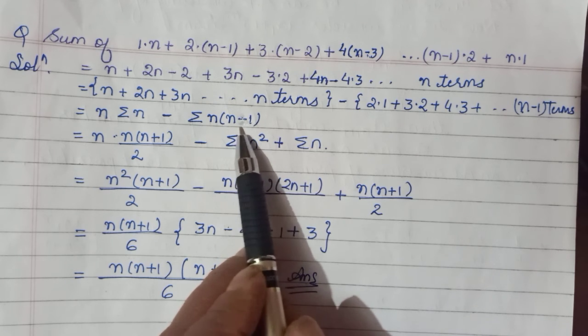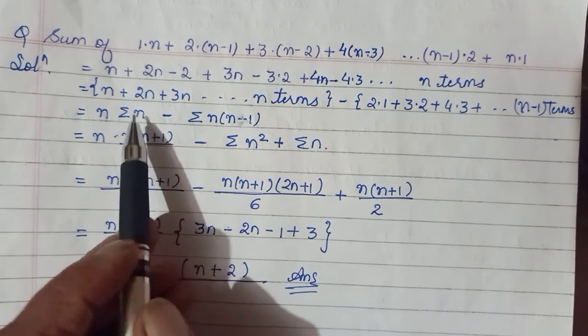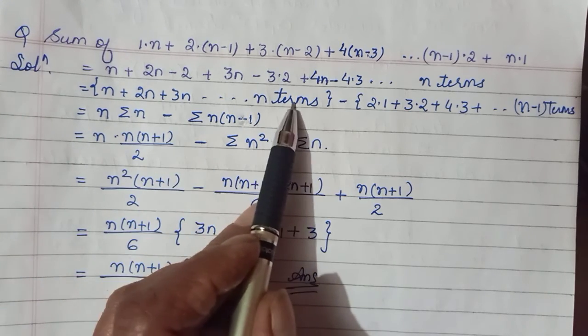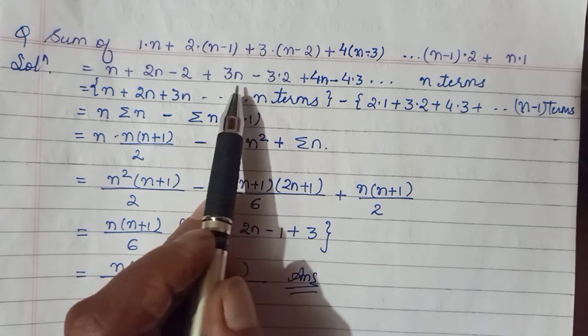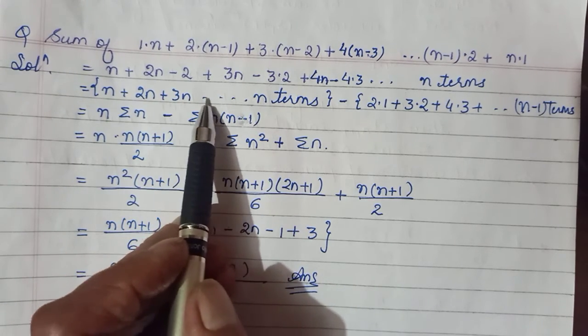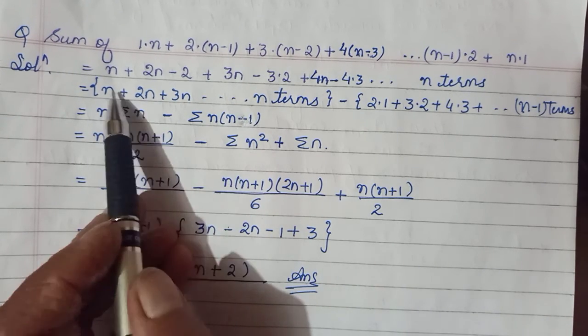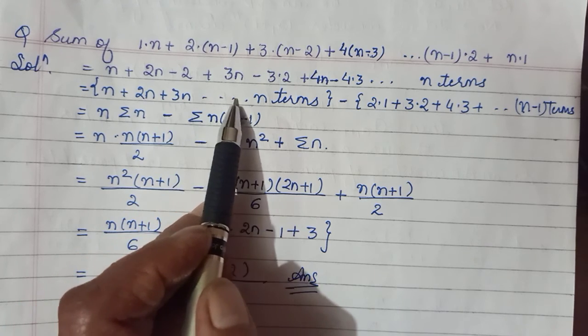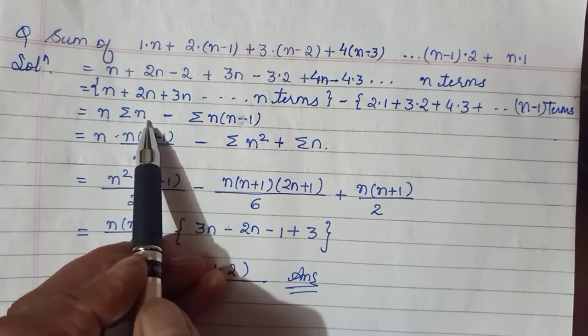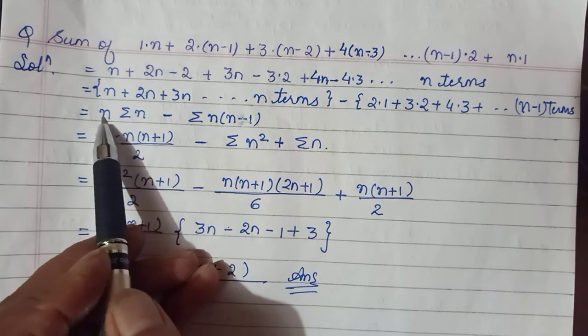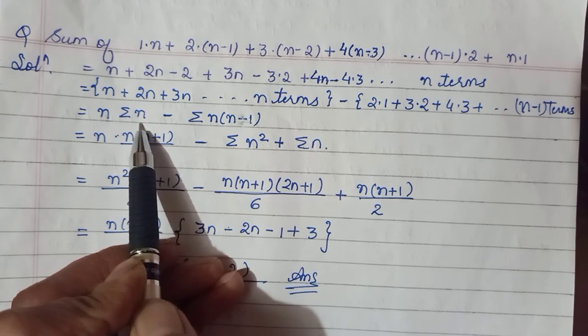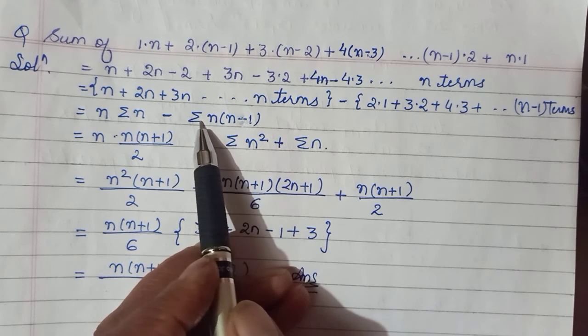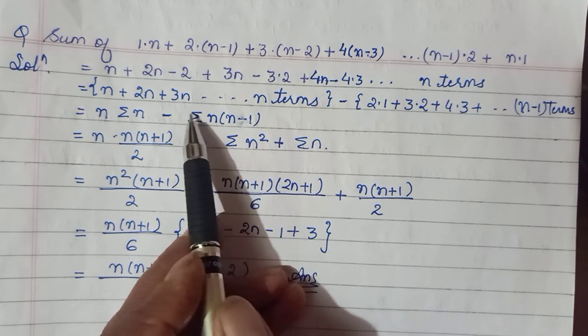Alright, that way it will go. So putting from here, now from this lot you can take n common from all the terms: n, n, n sabse common jayega. Toh yaha ander kya bachega? Σn. 1 + 2 + 3 + 4, this way it will go. n terms hain toh Σn. Toh n taken common and remaining sum is Σn, right? And likewise yaha se hamara yeh nth term aayega: n·... Σn².